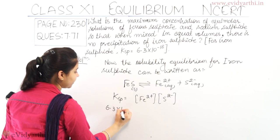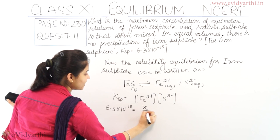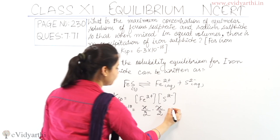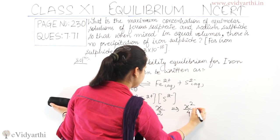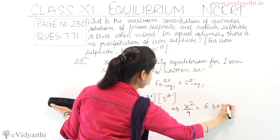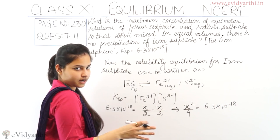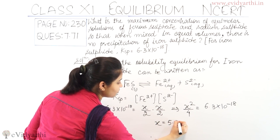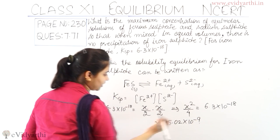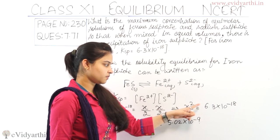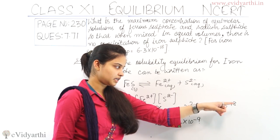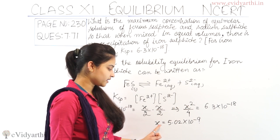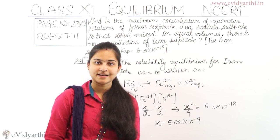6.3 × 10⁻¹⁸ = (x/2) × (x/2), which gives x²/4 = 6.3 × 10⁻¹⁸. When I solved this properly, the value of x I obtained is x = 5.02 × 10⁻⁹ mol/L.